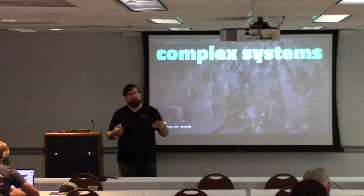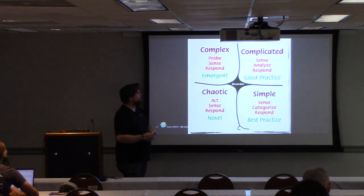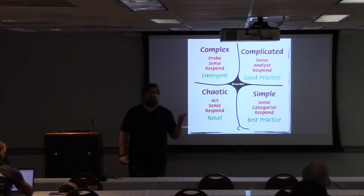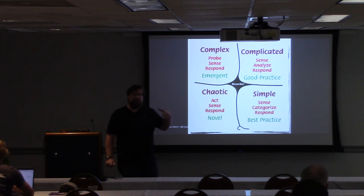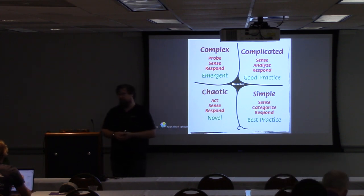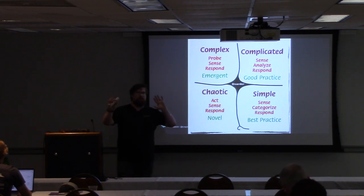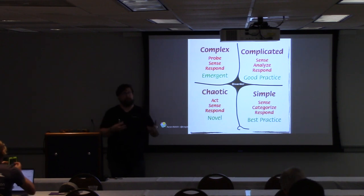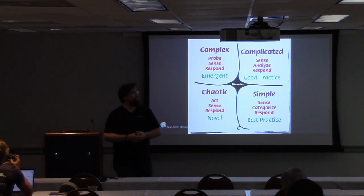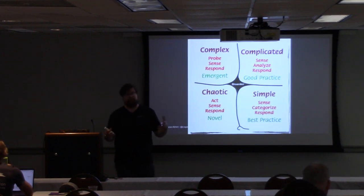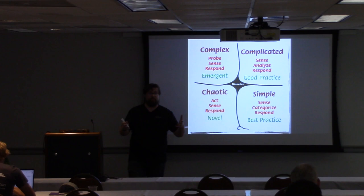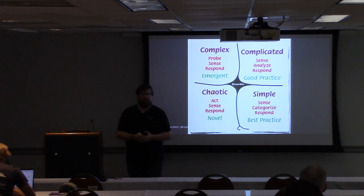This is the Cynefin framework and how it relates to complexity. The lines between quadrants aren't hard barriers — they're soft, about categorization of a situation or system. Simple problems are understandable by pretty much anyone. A disassembled Lego set might be a simple problem: you look at it, categorize it as the Batmobile Lego set, and respond by following the instructions to put it together. Even a child with appropriate motor skills can do it — no specific domain knowledge required.